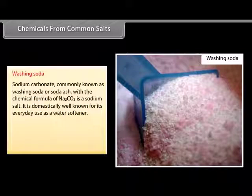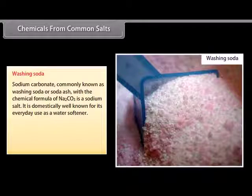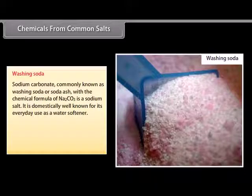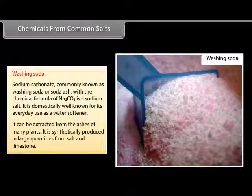Sodium carbonate, commonly known as washing soda or soda ash, has the chemical formula Na2CO3 and is a sodium salt. It is well known for its everyday use as a water softener. It can be extracted from the ashes of many plants and is synthetically produced in large quantities from salt and limestone.